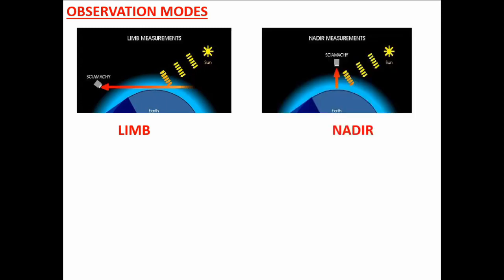We also have the nadir measurements, which measure in the vertical column. When the radiation or source of light hits the atmosphere or the point of observation, it is scattered in different directions. The ones that move in the vertical column will move towards the satellite, which then picks information in the vertical column. That is the nadir mode of observation.